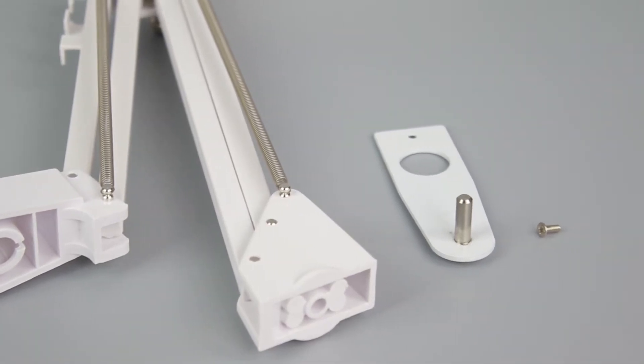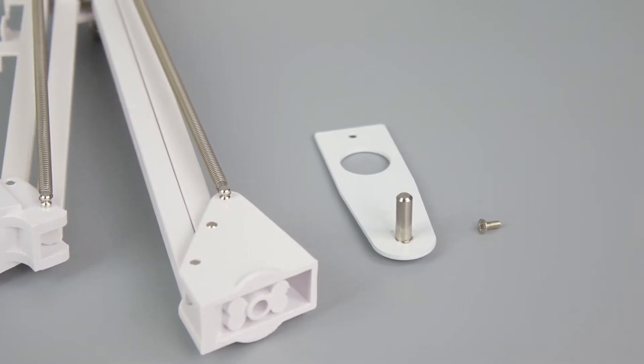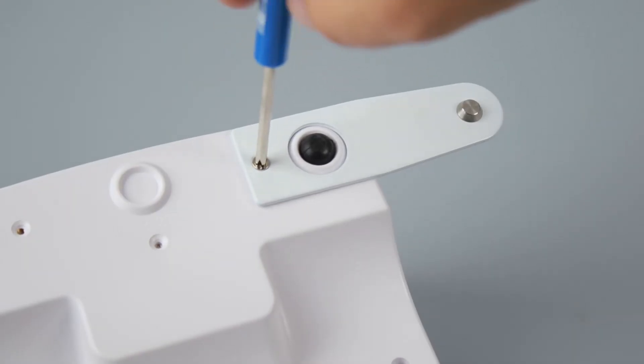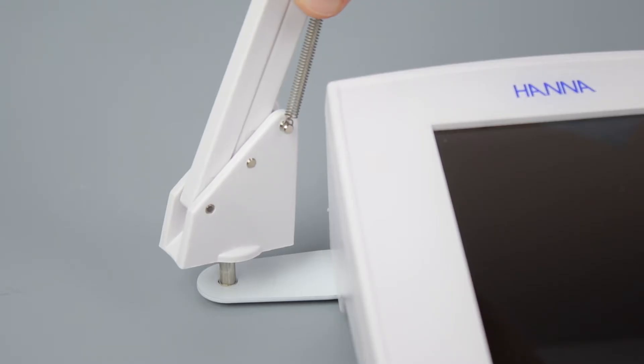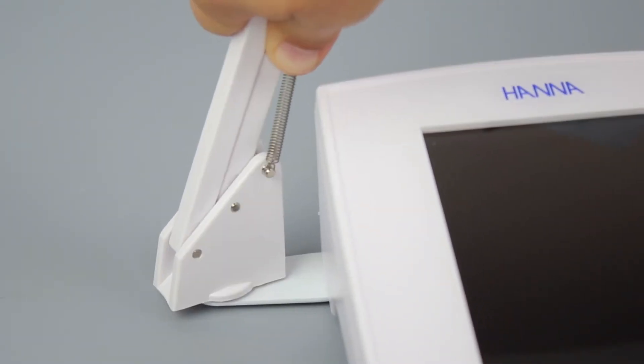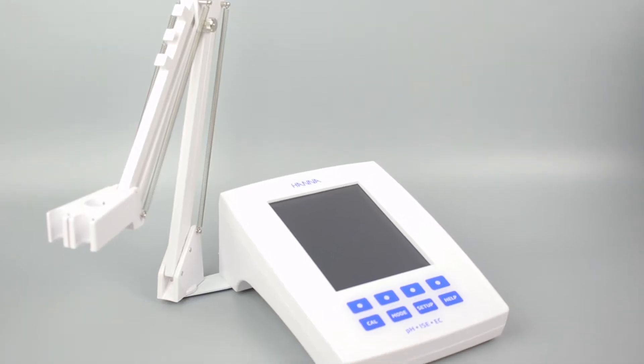Inside the box, you'll find the base plate, screws, and the electrode holder. To attach the holder, screw the base plate into the bottom of the meter and slide the arm into place. Once that is assembled, you can begin setting up your meter.